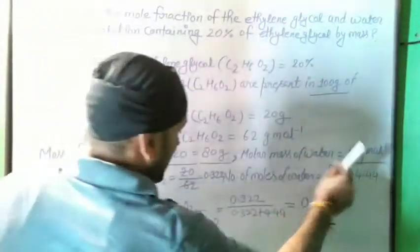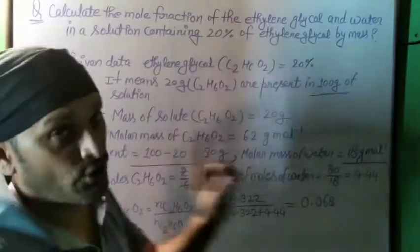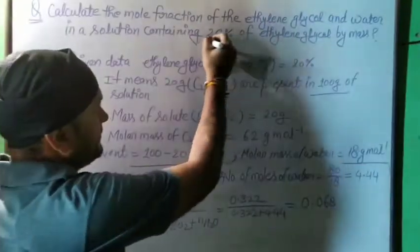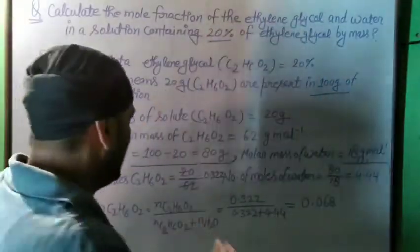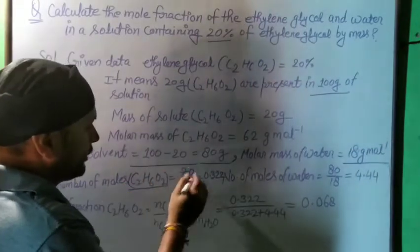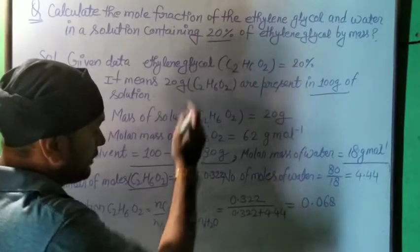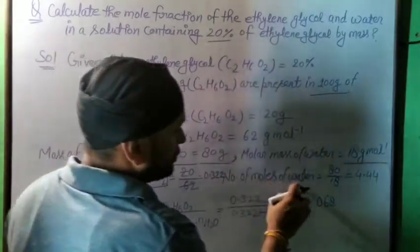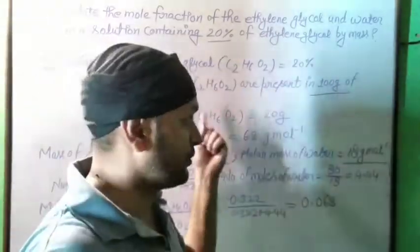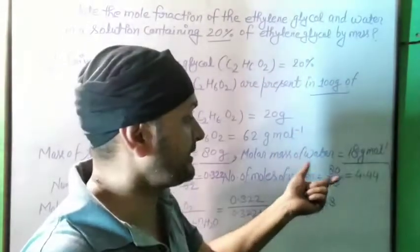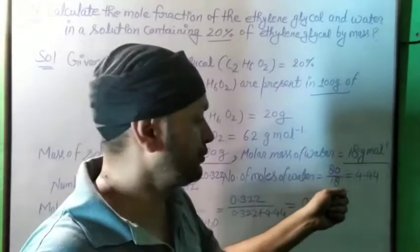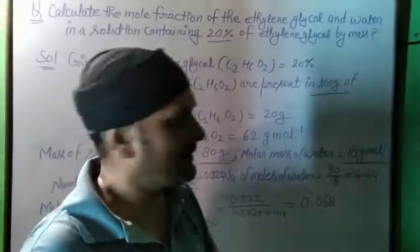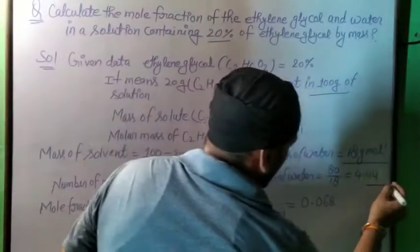To find the number of moles of water: 100 minus 20 gives 80 grams of water. So 80 divided by 18 (molar mass of water) gives 4.44 moles (or 4.45, since it repeats/is non-terminating).